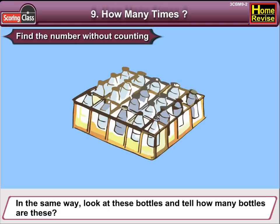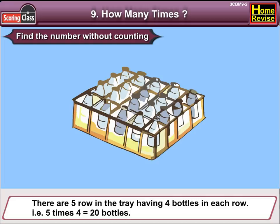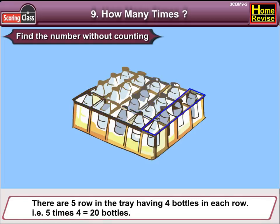In the same way, look at these bottles and tell me how many bottles there are. There are 5 rows in the tray, having 4 bottles in each row. That is 5 times 4, which is 20 bottles.